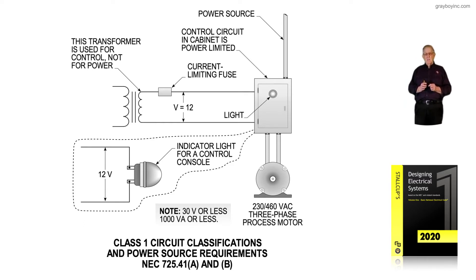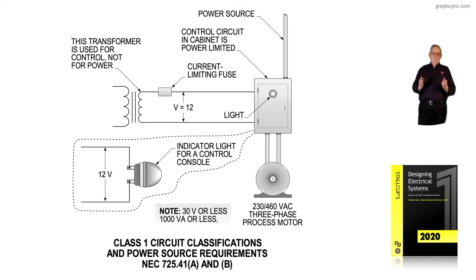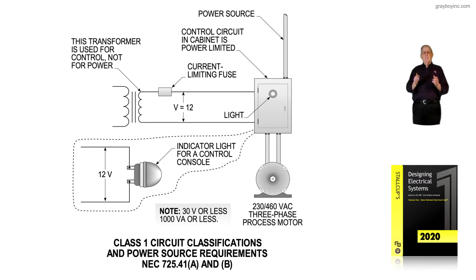NEC 725.41B deals with power-limited circuits. That section states that a Class 1 power-limited circuit is 1,000 volt-amps or less, and usually 30 volts or less. This gives us the classification of a power-limited circuit versus a non-power-limited circuit.